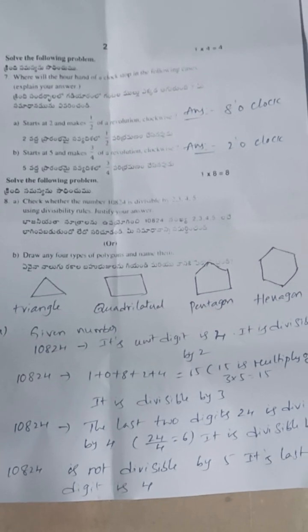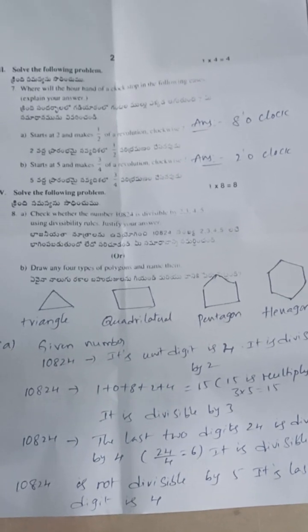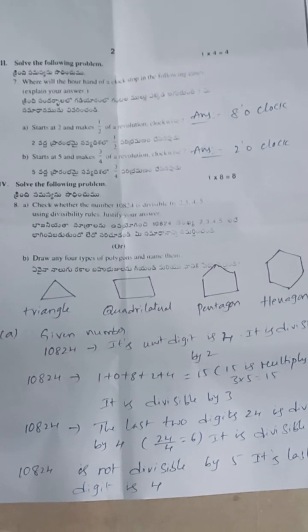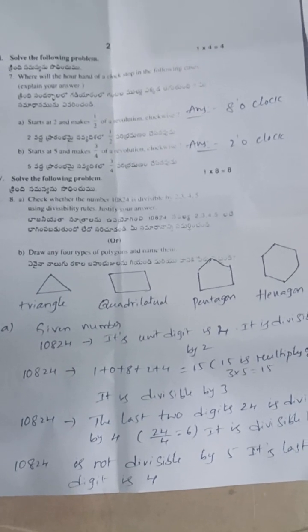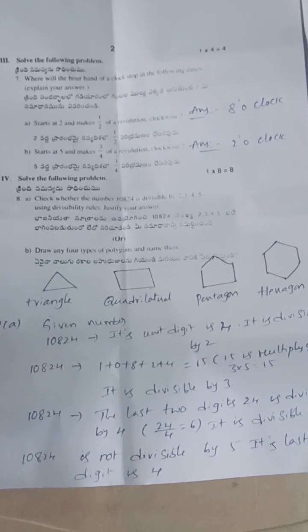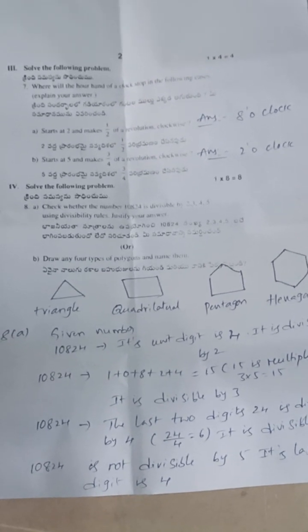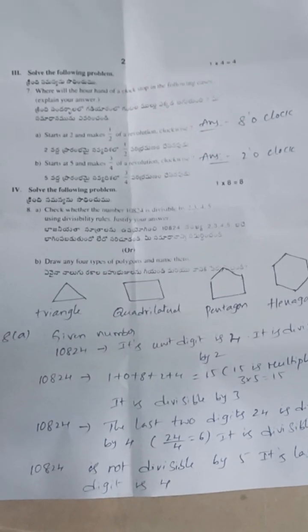15 is a multiple of 3, so 1824 is divisible by 3. For divisibility by 4, the last two digits must be divisible by 4. The last two digits are 24, and 24 is divisible by 4. However, 1824 is not divisible by 5 because the last digit is 4, not 0 or 5.